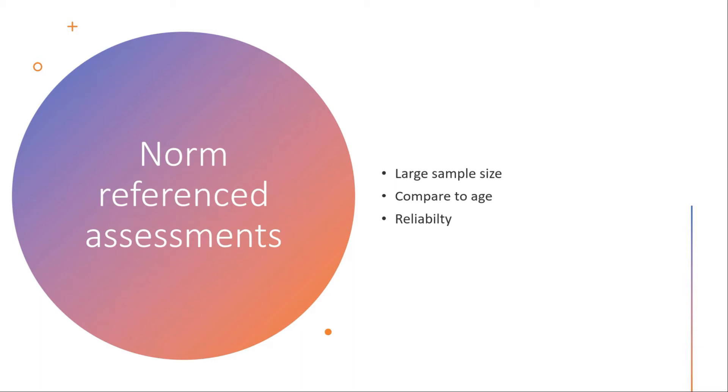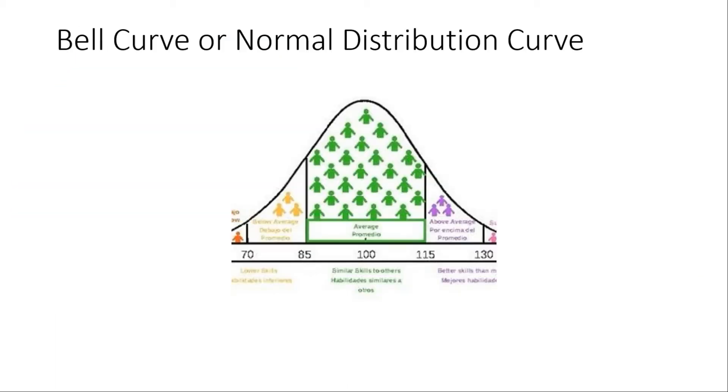The results you'll see all fall into the bell curve or the normal distribution curve. You probably learned about this in high school. Sixty-six percent of the population, or two-thirds, are in this average range. We have a small percentage who are above or superior, and a smaller percentage who are below and significantly delayed or significantly below.